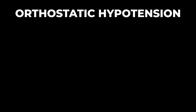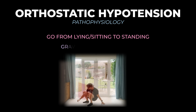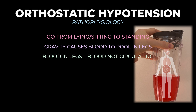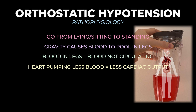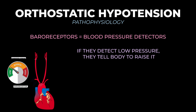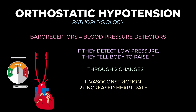When you go from sitting or lying to standing up, gravity causes blood to pool in the lower extremities. With less blood available for the heart to pump — reducing cardiac output — there's less blood circulating throughout the body. Baroreceptors in the aorta and carotid arteries measure blood pressure at all times. When they detect a drop in blood pressure, they activate the body to make changes to normalize it — specifically, constricting blood vessels and increasing heart rate. This is done by activating the sympathetic nervous system.